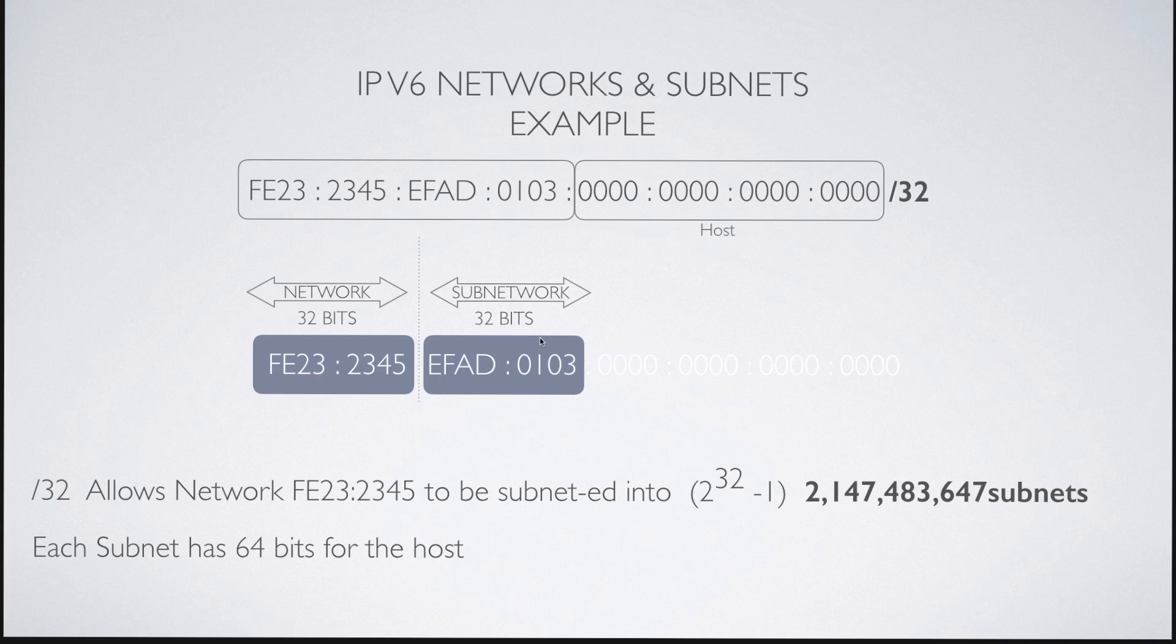So let's take an example. We have FE232345EFAD0103 with a mask of 32, meaning that FE232345 is the actual network number. And then we have 32 bits remaining. And in this case, we just show one subnet EFAD0103, but this slash 32 allows us to create a whole bunch of subnets for network FE232345. And each of those subnets has 64 bits available for the host assignment.